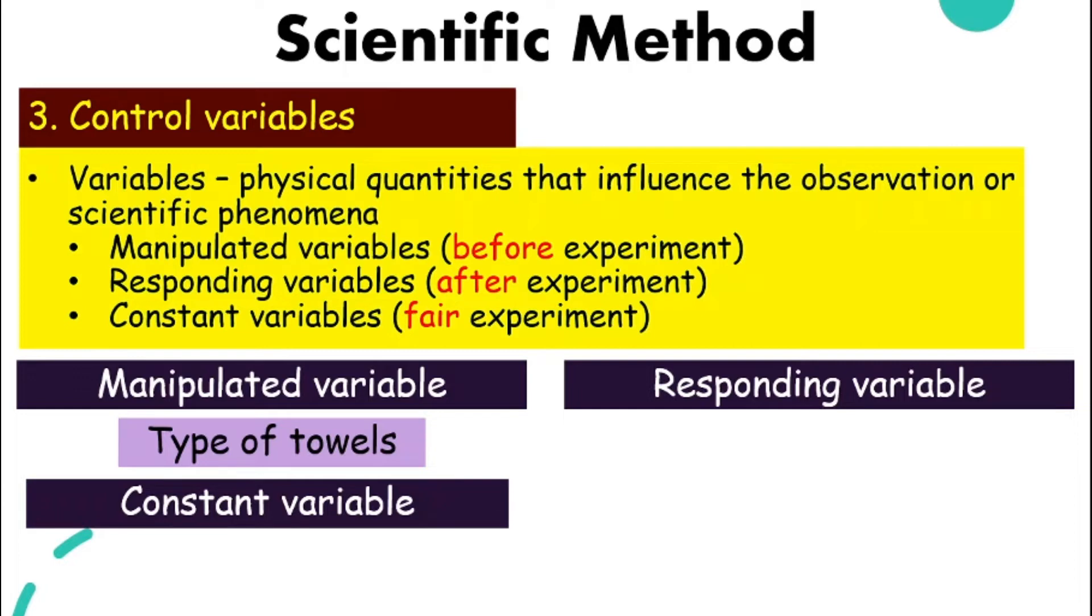What is your responding variable? Responding variable, we only know after we do the experiment. So it is the amount of water absorbed. Before we do the experiment, we can only guess, we do not know for sure. After the experiment, we can calculate, we can measure, then that is the responding variable.